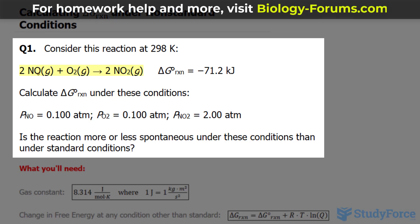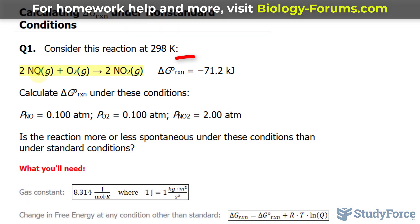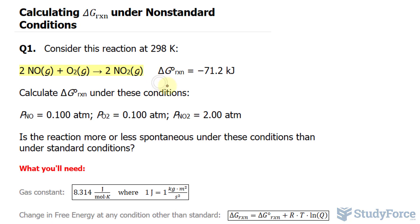We have two molecules of NO plus O2, and this yields two molecules of NO2. We've been given the delta G for the reaction as negative 71.2, and this is under standard conditions.